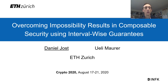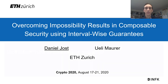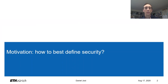Welcome to my talk on overcoming impossibility results in composable security using interval-wise guarantees. This is joint work with Uri Maurer. The main question of this work is how to best define security.